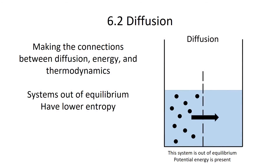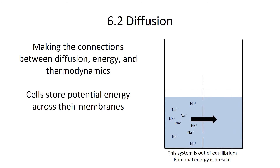Let's make the connections between diffusion, energy, and the laws of thermodynamics. A system out of equilibrium has lower entropy. So if you have a concentration gradient — more solutes on one side of a membrane than the other — you're out of equilibrium, storing potential energy, and you can use that to do work. This is exactly what cells do: cells create and maintain concentration gradients across their cellular membranes, storing energy across their membranes that they can use to do work, much like a battery stores energy.